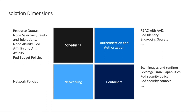Then we need to think of network isolation. Kubernetes has a flat network by default, which means any pod can access any other pod even across different namespaces. To prevent this, you will need to use Kubernetes network policies, which secure pod-to-pod communication by applying network security policies on groups of pods. We also need to protect access to the Kubernetes API so that only authenticated and authorized identities can interact with the cluster, using Kubernetes RBAC with Azure Active Directory integration, pod identity, secrets encryption, and other features.